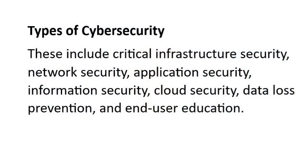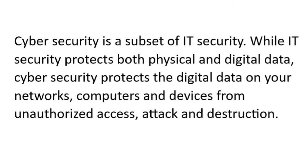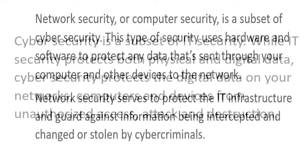Let's talk about the types of cybersecurity. In order to better protect these systems, it's important to know the different types. They include critical infrastructure security, network security, application security, information security, cloud security, data loss prevention, and end-user education. Critical infrastructure security consists of cyber-physical systems such as electrical grids or water purification systems. Network security protects internal networks from intruders by securing infrastructure — examples include implementation of two-factor authentication and stronger passwords.